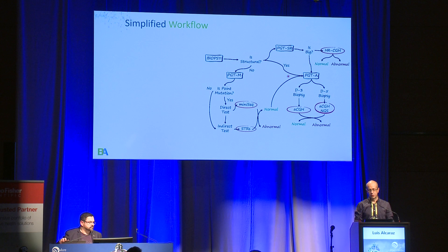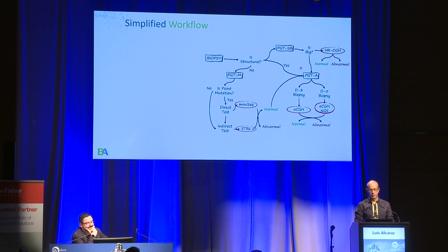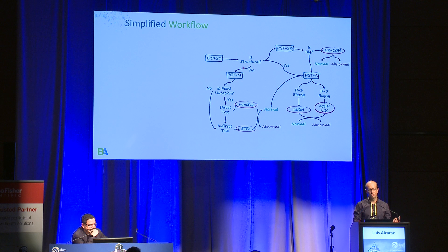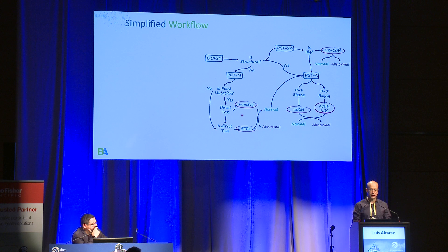For aneuploidy screening, we were using a combination between array CGH and next-generation sequencing, depending on the day of the biopsy. For structural rearrangements, we were using the normal PGTA protocol if the aberration we wanted to detect was large. If it was small, then we moved to high-resolution arrays.